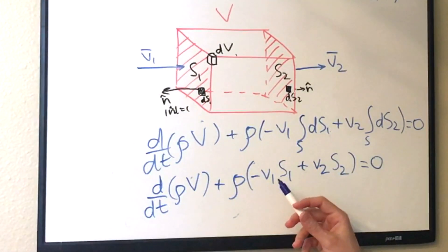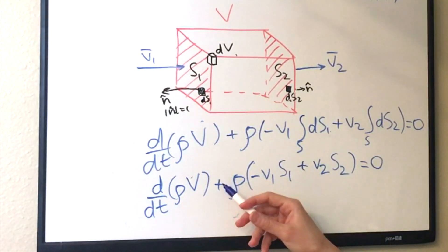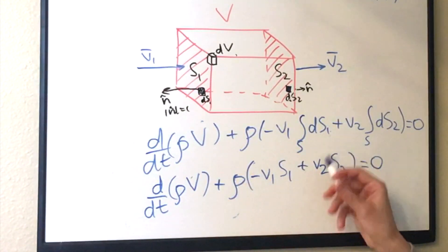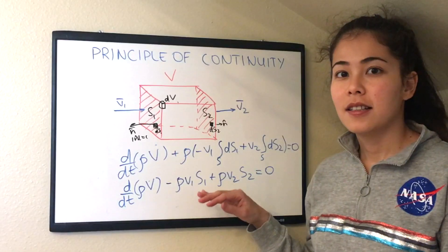So now let's simplify it a little bit more by taking out the negative sign over here and multiplying the second term here by density.